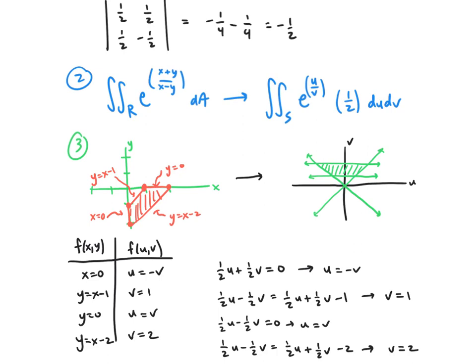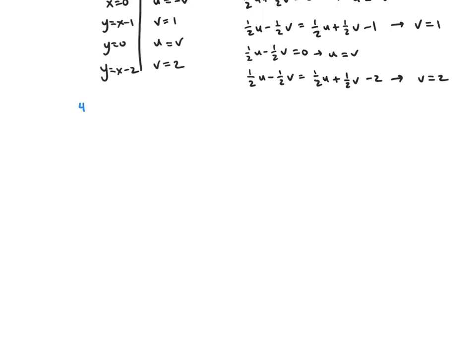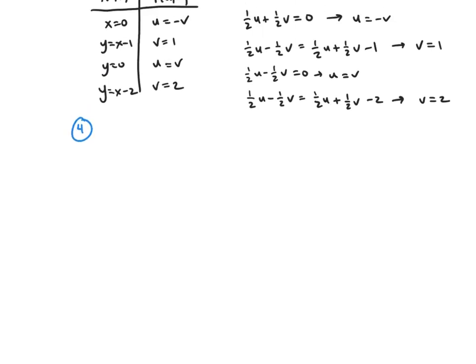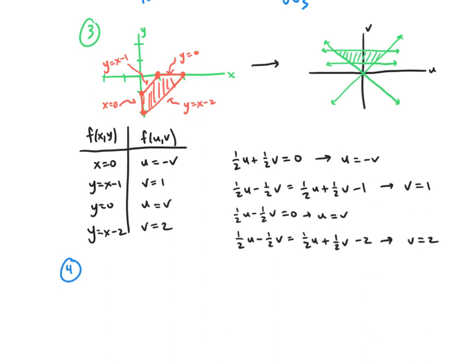And then our last step here is that we're going to calculate this new double integral. Okay, and actually let me include the graph that we just found. So when we're looking at our graph, well, first off, we have 1/2. And then we have the outer integral in terms of v. So the minimum v is 1, the maximum is 2. So 1 to 2.